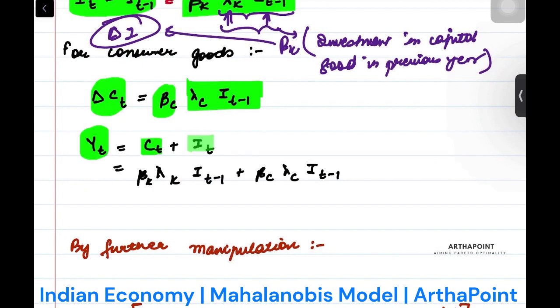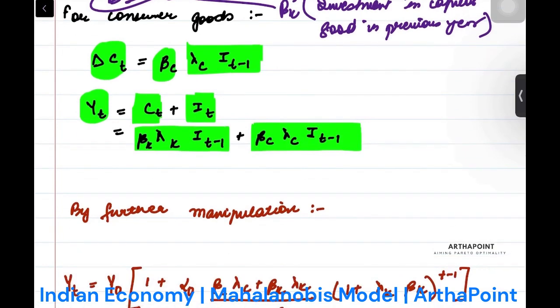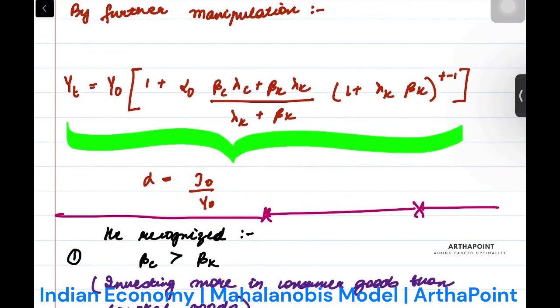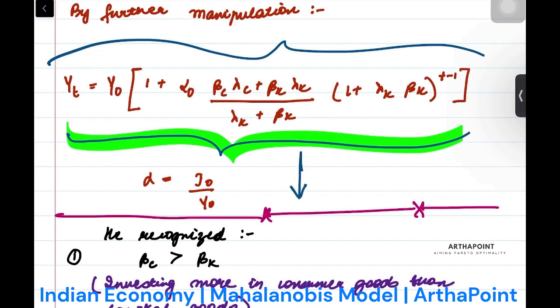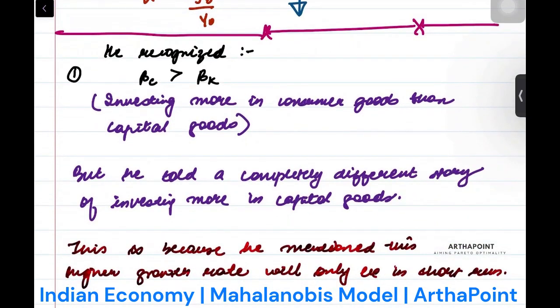Output can either be consumed or invested: Y equals C plus I. Then Mahalanobis did some more manipulations and finally he got an equation. Why is this important? From this entire equation he said that this equation holds true and is useful only if beta_c is greater than beta_k. This is his result. This is what is important to us.